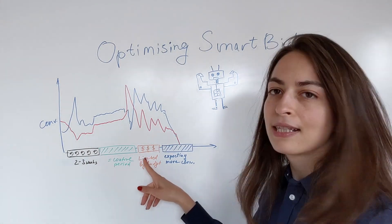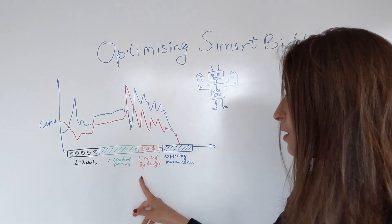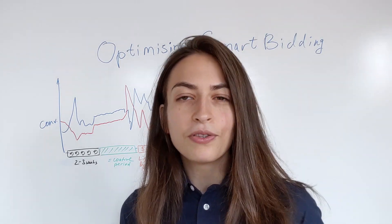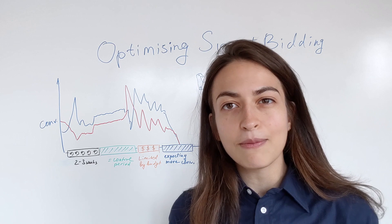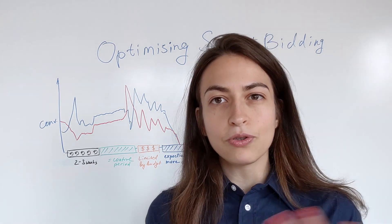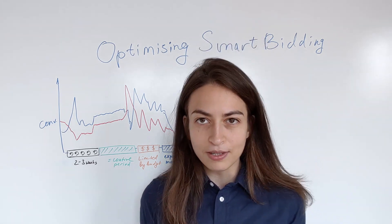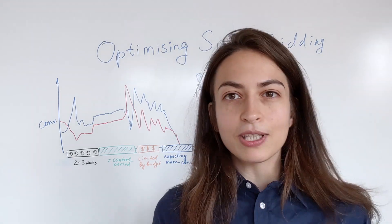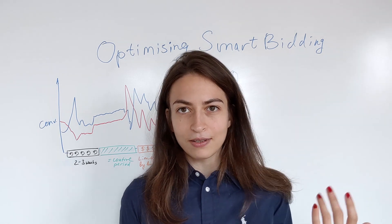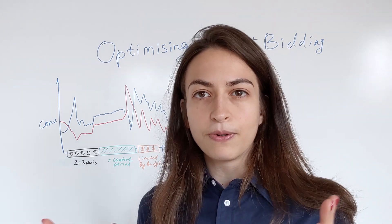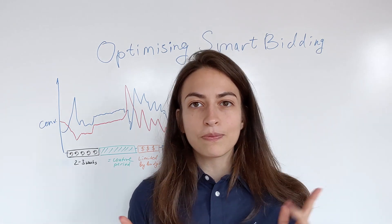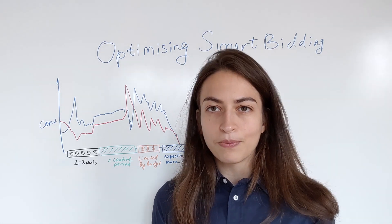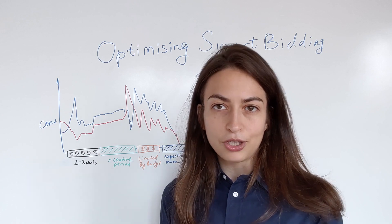You may also see a red area indicating the campaign was limited by budget. Smart bidding campaigns should not be limited by budget — except for maximize conversions, which tries to get as many conversions as possible with whatever budget you give it, so it will be budget-limited by default. However, target ROAS and target CPA must not be budget-limited, as this restricts performance and makes the algorithm struggle — it's not performing as a true smart bidding strategy. You must exclude any period when the campaign was limited by budget from your performance assessment.